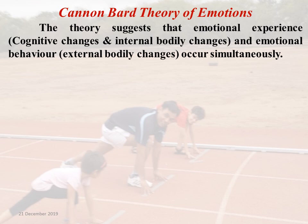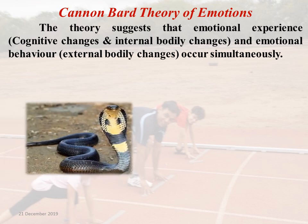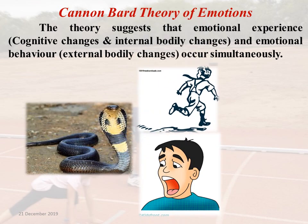Let us understand it through the diagram. Suppose when you experience a stimulus — say, a dangerous reptile — as per the Cannon-Bard theory, emotional experience as well as emotional behavior occur simultaneously. We try to fight or flight in response to the stimulus, and simultaneously we manifest our behavior as well as experience the emotions. This slide completely illustrates the Cannon-Bard theory of emotions.